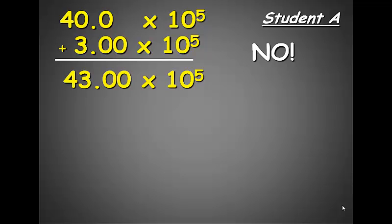Therefore, because 43 is way greater than 10, we have to shift the decimal point. And in this case, we need to move it over 1, which would take our exponent up one number, or 4.3 times 10 to the 6th.